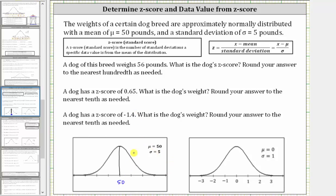To the right of the mean: 50 plus five is 55, 55 plus five is 60, and 60 plus five is 65. To the left of the mean: 50 minus five is 45, 45 minus five is 40, and 40 minus five is 35. On the right, we also have the standard normal distribution, where we have the z-scores along the horizontal axis.